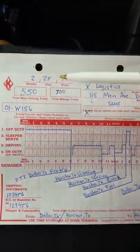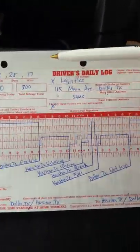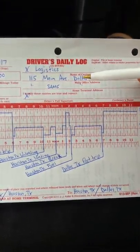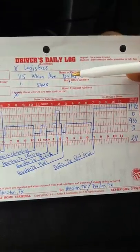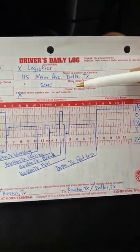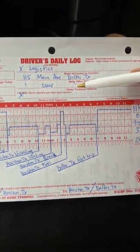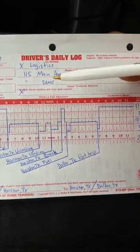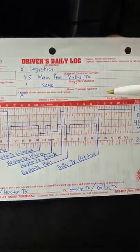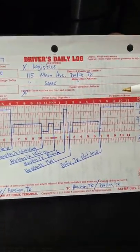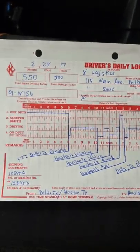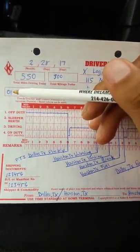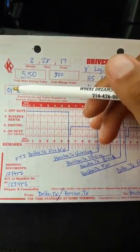First off, we're going to write the date, the name of the company, and the address of the company. If the terminal is the same as the office, just go ahead and write down the same. Your signature goes here, and if you have a co-driver, go ahead and write their name down.